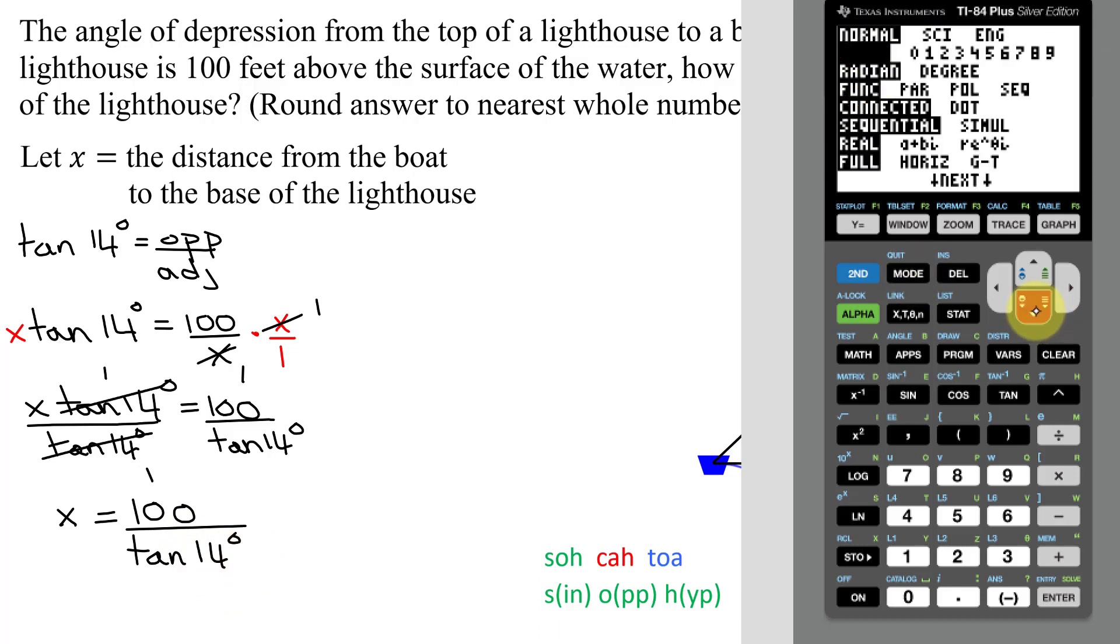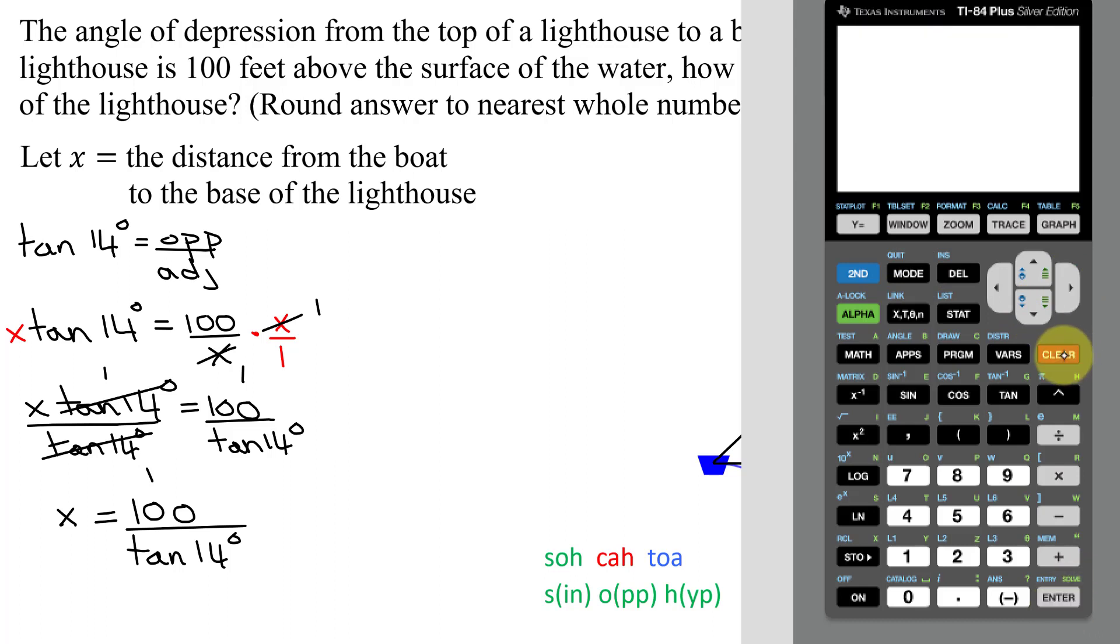I'm in radians, so scroll down over and hit enter. Now I'm in degrees. And now I need to put in 100 divided by the tangent. Here's the tangent of 14 degrees, close parentheses, and hit enter.